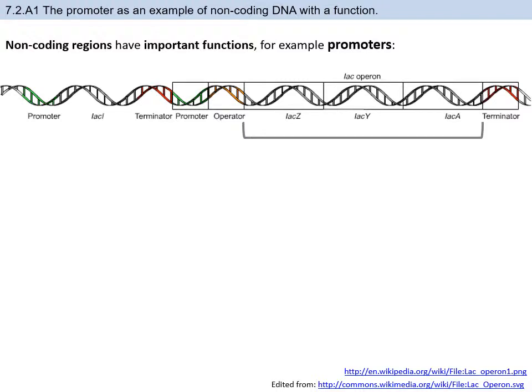We're going to talk about transcription regulation in prokaryotes first and then later get into eukaryotes. Prokaryotes are bacterial cells — simple forms of life. Interestingly, in prokaryotes, all of the important genes are located next to each other. All the things that make a protein are going to be right next to each other.